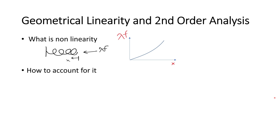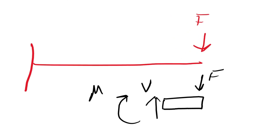So how do we account for this non-linearity? There are multiple ways, but one is to conduct a second-order analysis. To understand second-order analysis, we first need to discuss first-order analysis. A first-order analysis uses equilibrium of forces on the undeformed geometry to determine internal forces inside the beam — in this case, shear forces and bending moments caused by the applied force f.